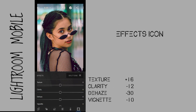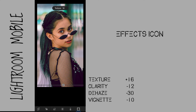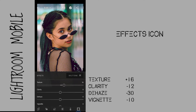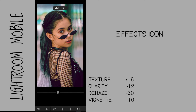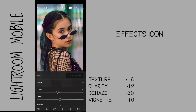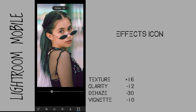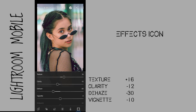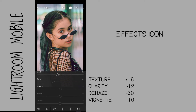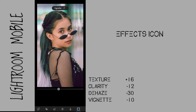Go to the effects icon. Set Texture to plus 16, Clarity to negative 12, Dehaze to negative 30, and Vignette to negative 10.